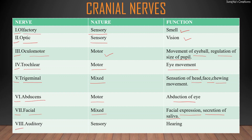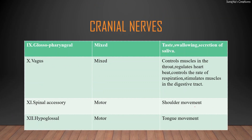The eighth cranial nerve is the auditory nerve; it is sensory in nature and is concerned with the sense of hearing. The ninth cranial nerve is the glossopharyngeal nerve; it is a mixed nerve composed of both sensory and motor components, concerned with taste, swallowing, and secretion of saliva. The tenth cranial nerve is the vagus nerve; it is the largest cranial nerve and a mixed nerve. It controls muscles in the throat, regulates heartbeat, controls the rate of respiration, and stimulates muscles in the digestive tract.